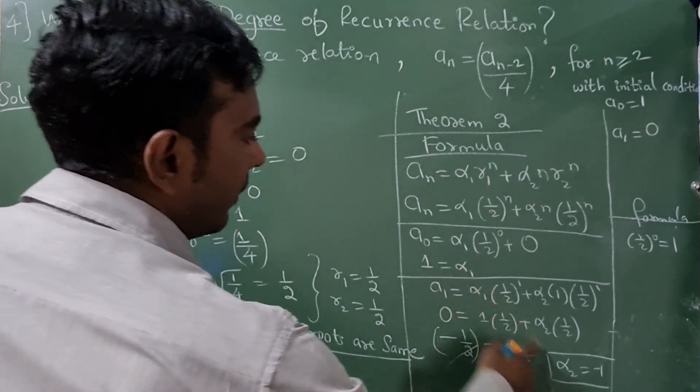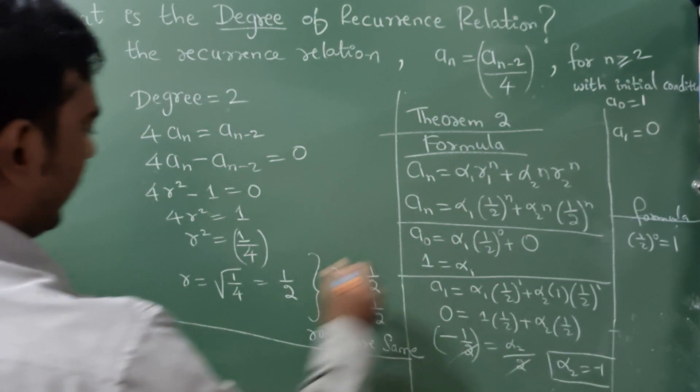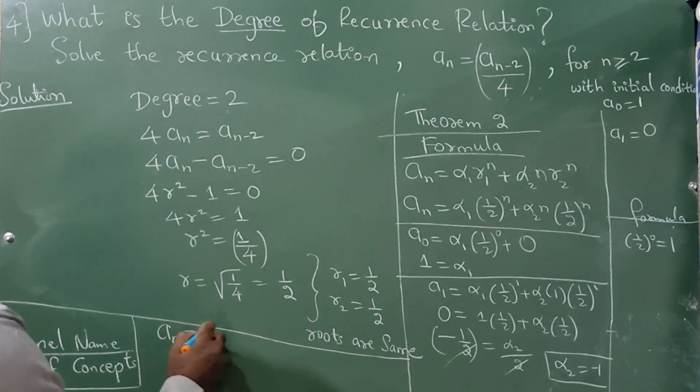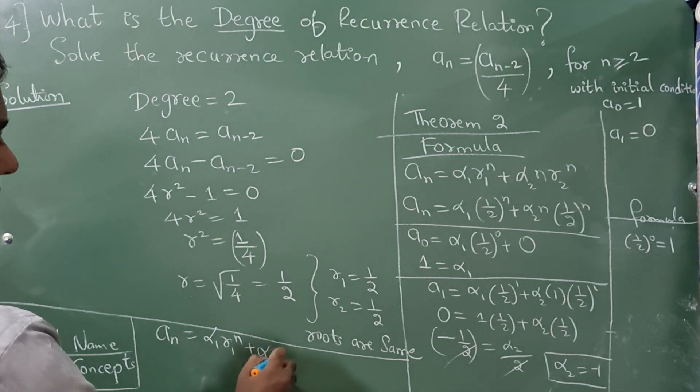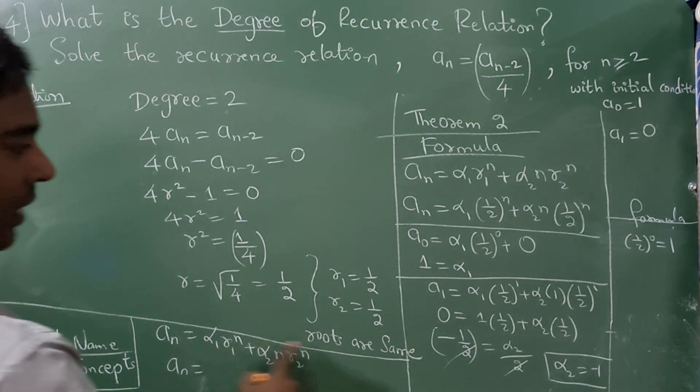Now substitute α₁ and α₂ values in the main equation. I'll write once again: a_n = α₁r₁ⁿ + α₂n·r₂ⁿ. a_n, what is α₁? It is 1. What is r₁? 1/2 raised to n.